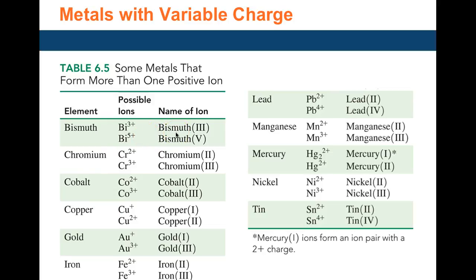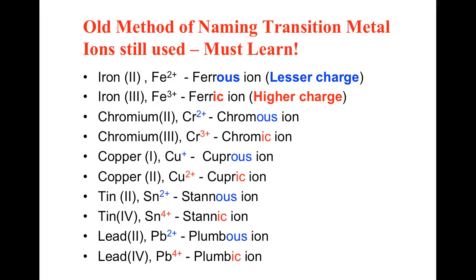Table 6.5 shows various transition metals and their corresponding metal ions and names. The asterisk shown for mercury indicates that mercury 1+ looks like Cu+ except that there are two atoms of mercury forming that ion pair. Each has a +1, but together it's a 2+, so mercury 1 is written with the formula showing two mercury atoms bonded together.